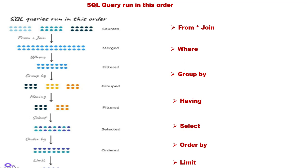HAVING filters the grouped data. Then SELECT retrieves the specified columns. ORDER BY orders the result set. And finally LIMIT limits the query results. This is the SQL query execution order.